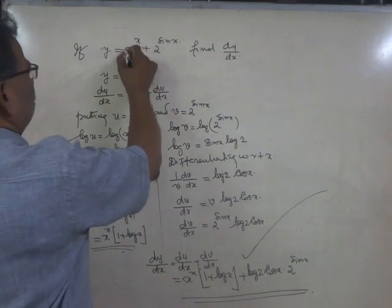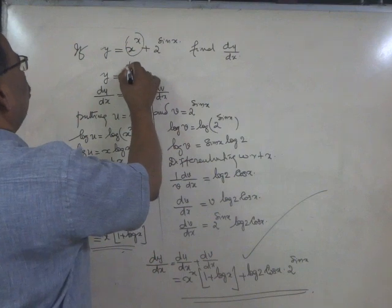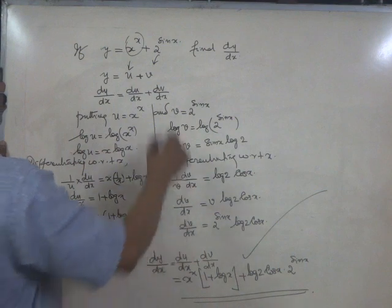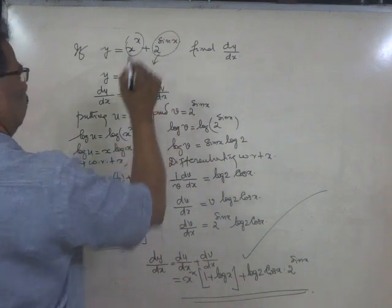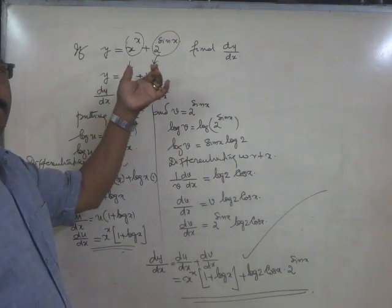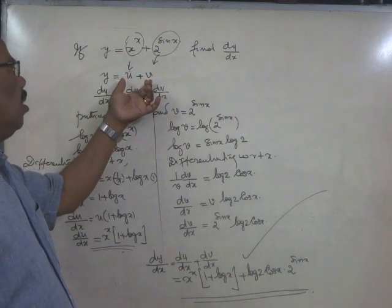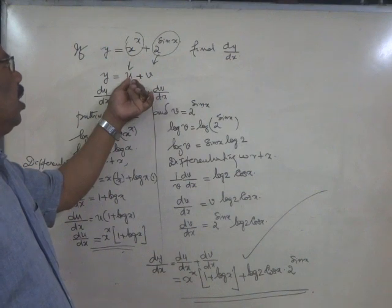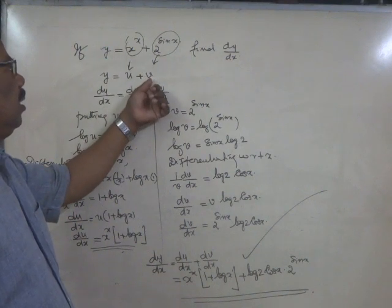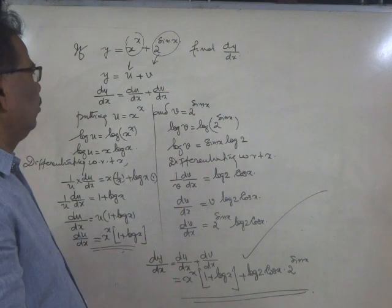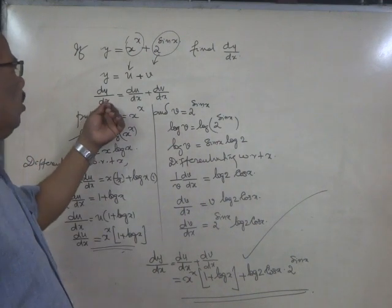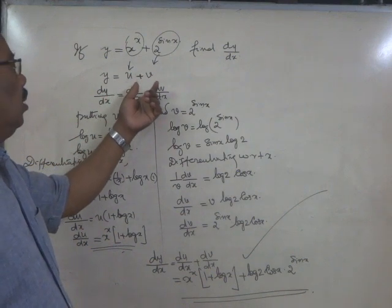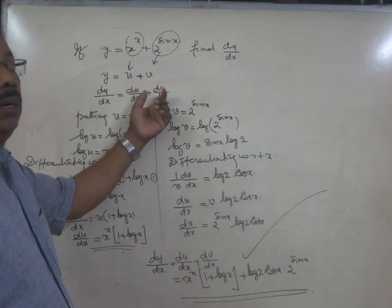We shall put x raise to x as u and 2 raise to sin x as v. That means y can be expressed as the sum of two functions: u equals x raise to x and v equals 2 raise to sin x. Then dy by dx will be the sum of the derivatives, du by dx and dv by dx.